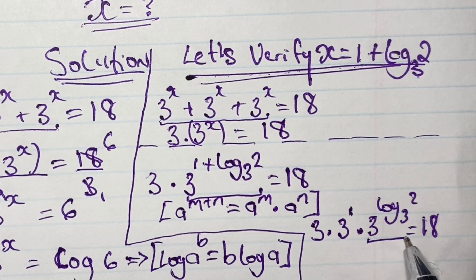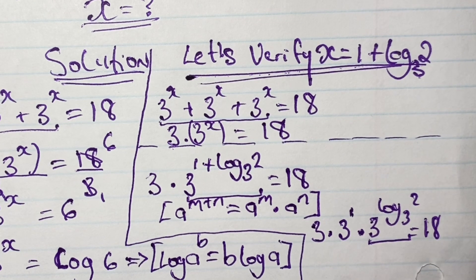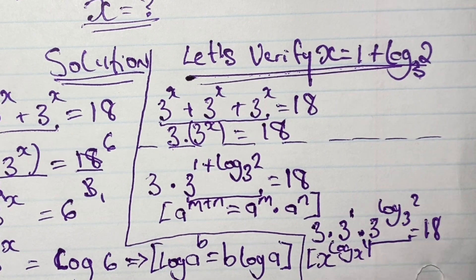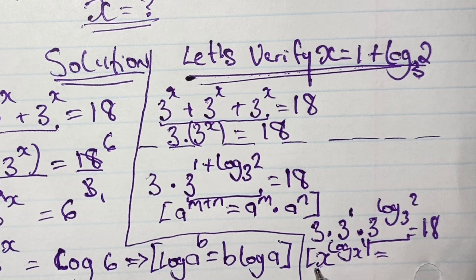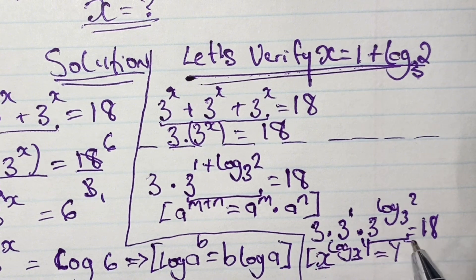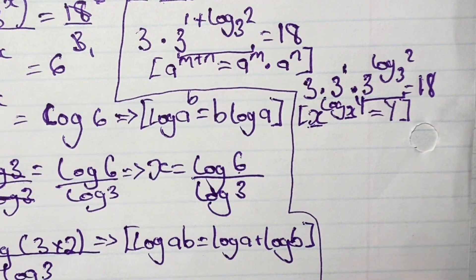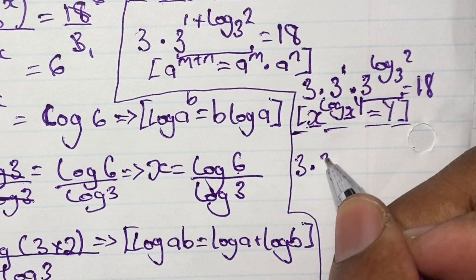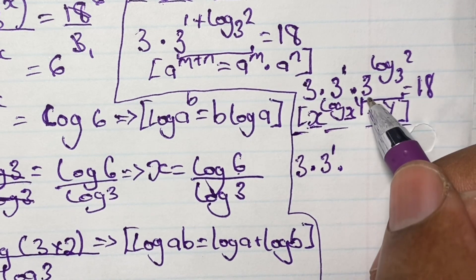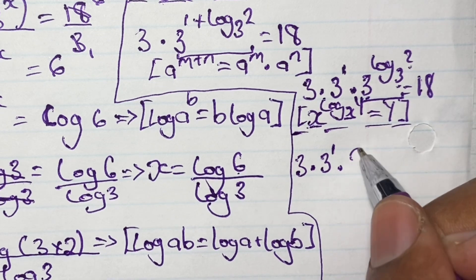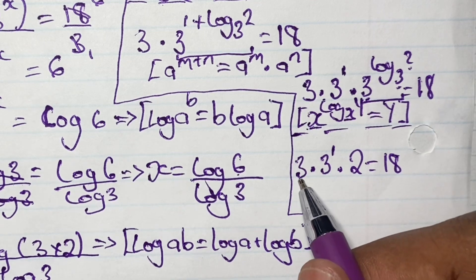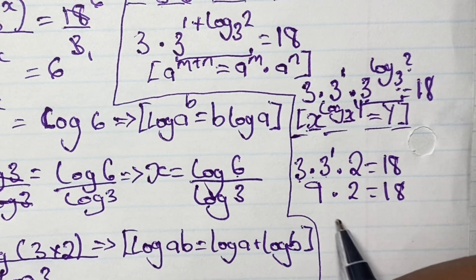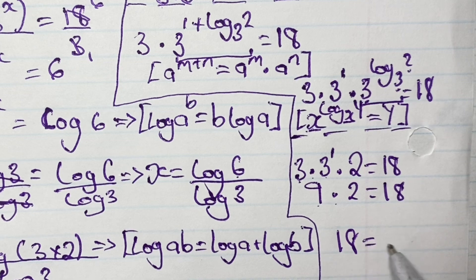Now looking at 3 to the power of log base 3 of 2, our logarithm rule states that x to the power of log base x of y, where the two bases are the same, equals y. So 3 to the power of log base 3 of 2 equals 2. Applying this rule, we have 3 times 3 to the power of 1 times 2, which equals 3 times 3 times 2. Now 3 times 3 gives us 9, so we have 9 times 2 is equal to 18, and there we have it — 9 times 2 gives us 18.